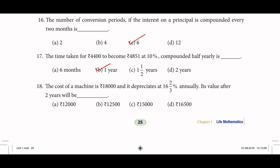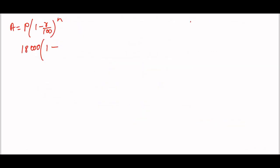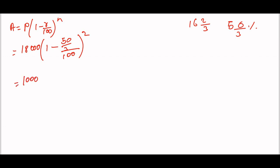Rate is 16⅔ percent, which equals 50 divided by 3 percent. So 50 divided by 3, the whole divided by 100, the whole power of 2. Putting it in: 18,000 into 1 minus 50 by 3 divided by 100, the whole squared. Now 50 and 100 cancel, 2 times.